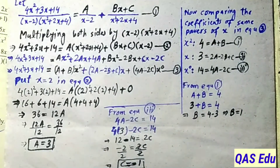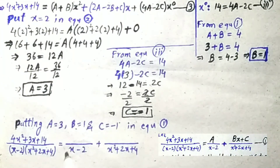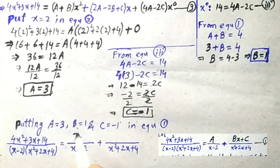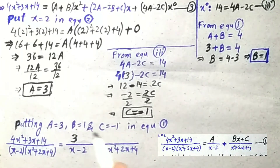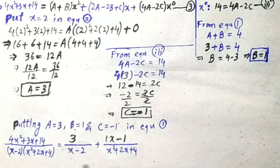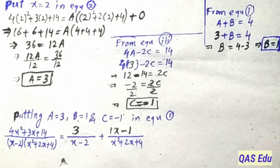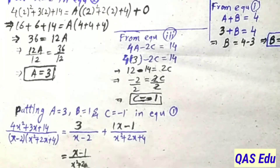Now putting A = 3, B = 1, C = -1 into equation number 1: for the linear factor the constant is A = 3. For the quadratic factor the numerator is Bx + C = 1x + (-1) = x - 1.